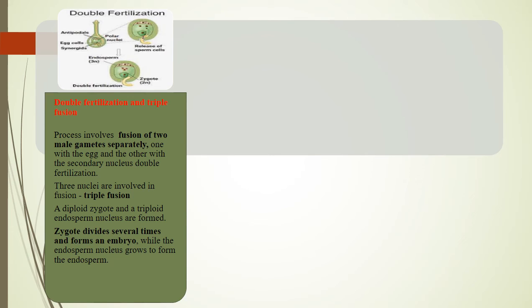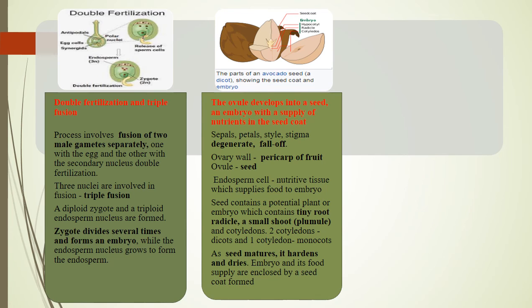The ovule develops into a seed — an embryo with a supply of nutrients enclosed in a seed coat. Following fertilization, the sepals, petals, style, and stigma degenerate and usually fall off. The ovary wall ripens and forms the pericarp of the fruit. The endosperm cell divides to form the endosperm or nutritive tissue which supplies food to the developing embryo. The seed contains a potential plant or embryo. The embryo contains a tiny root (radicle), a small shoot called the plumule, and cotyledons — two cotyledons in dicots and one cotyledon in monocots.